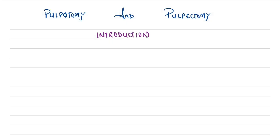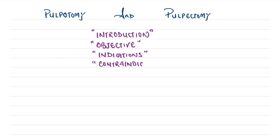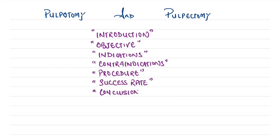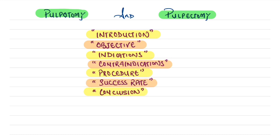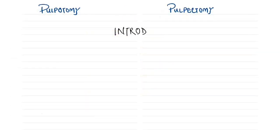Let's begin to learn about pulpotomy and pulpectomy in detail. We are going to cover the introduction, objectives, indications of these two procedures, the contraindications, how to perform pulpotomy and pulpectomy, the success rate of these procedures, and finally the conclusion.